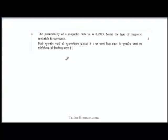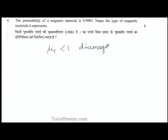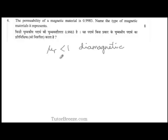Since the given magnetic material over here has a relative permeability which is less than 1, it is going to be a diamagnetic material. If you have a relative permeability which is greater than 1, but not very large, then it is a paramagnetic material. For materials that have an extremely high relative permeability, maybe even up to 1000, that would be a ferromagnetic material.